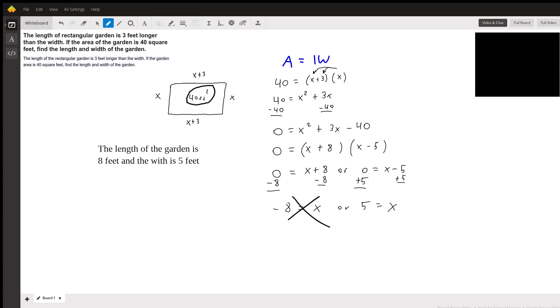Now, since the length and the width of a rectangle can't be negative, negative 8 will not be a solution. It's called an extraneous solution. It doesn't work. However, five does work. And if we plug a five in for our X in our length and our width, we get our length is going to be eight feet and our width is going to be five feet.